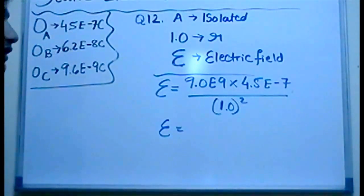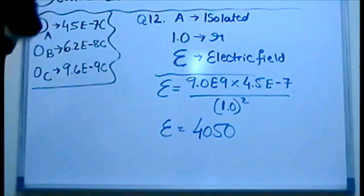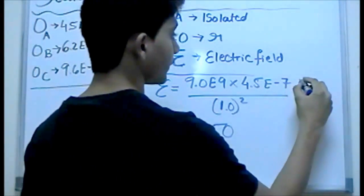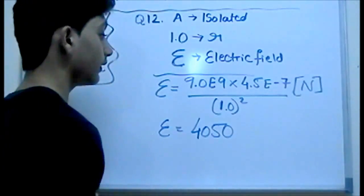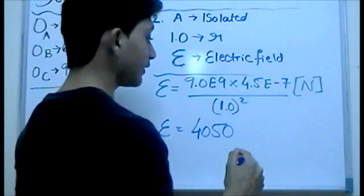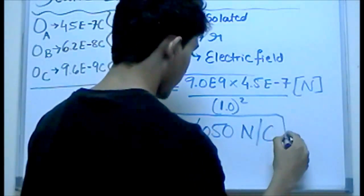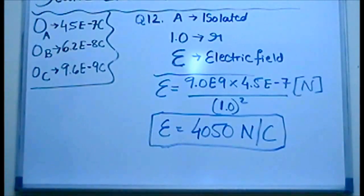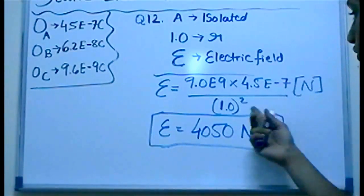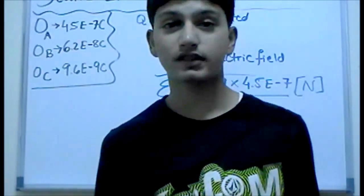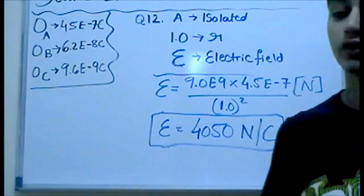When you get that answer, remember that the numerator involves force in Newtons and you're dividing by charge in Coulombs, so the unit is Newtons per Coulomb. That's how the electric field works. Deriving the answer is much harder than just solving those equations in your calculator, because it takes skills to calculate the problems, but it takes hard work to actually get the hang of those equations and put them in your mind.